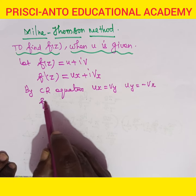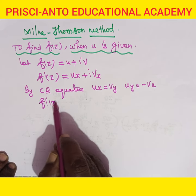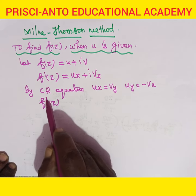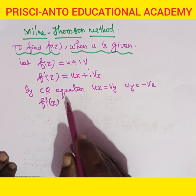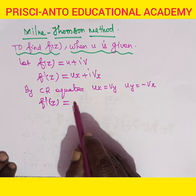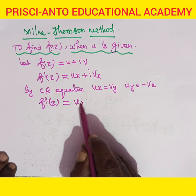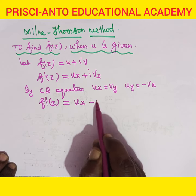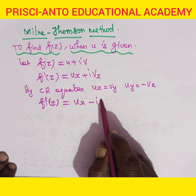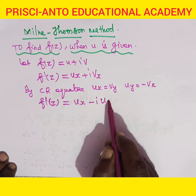Therefore, f dash of z becomes ux minus i into uy.